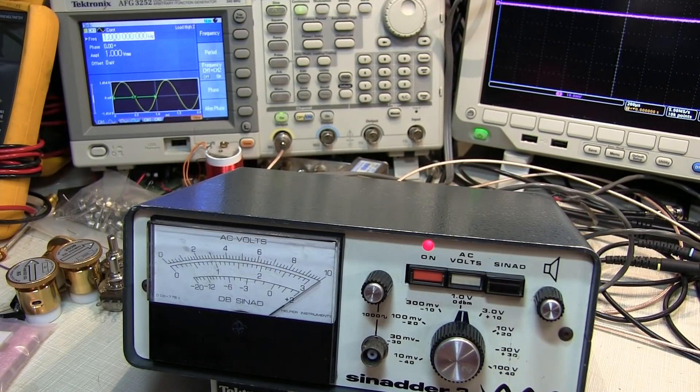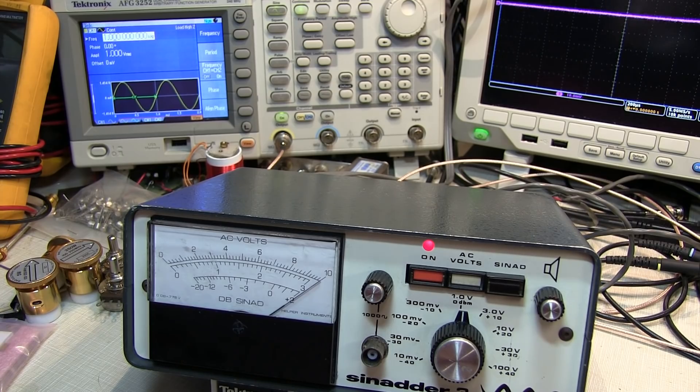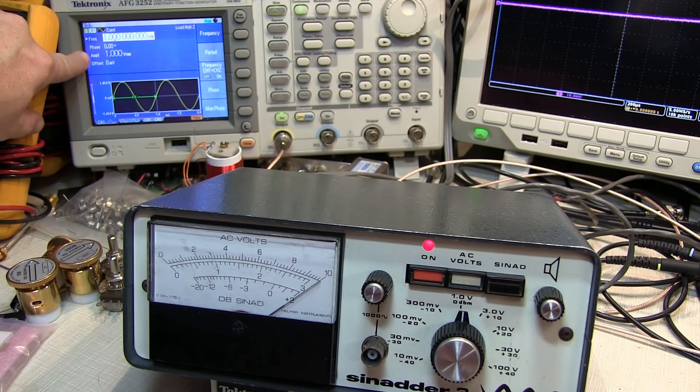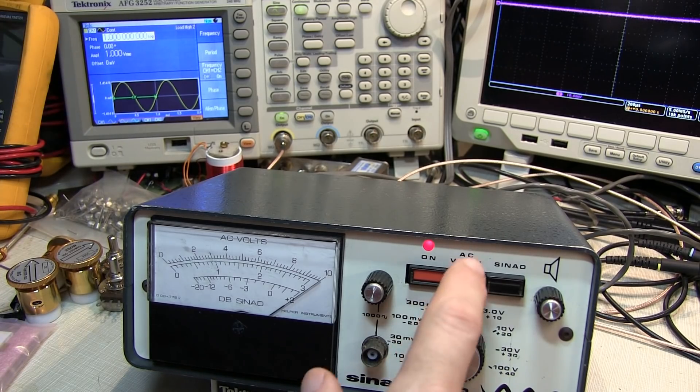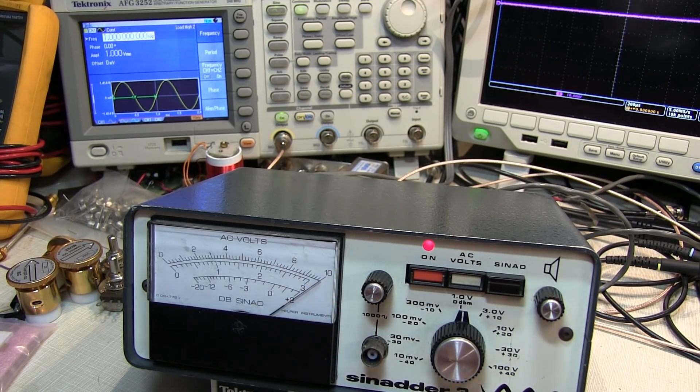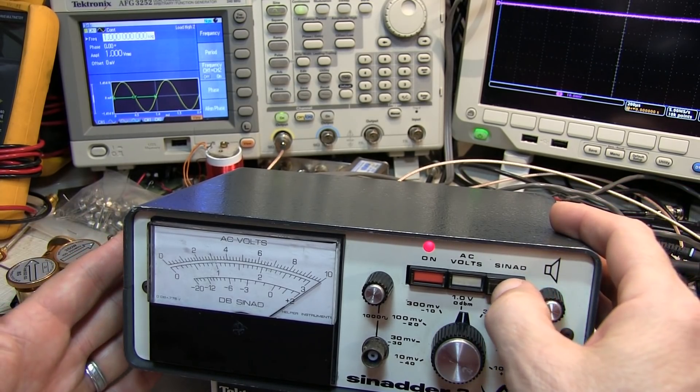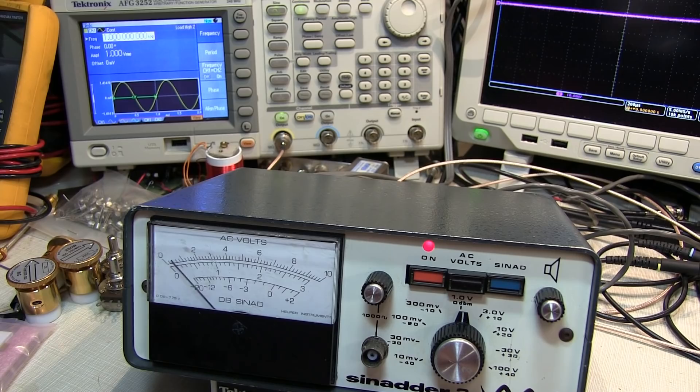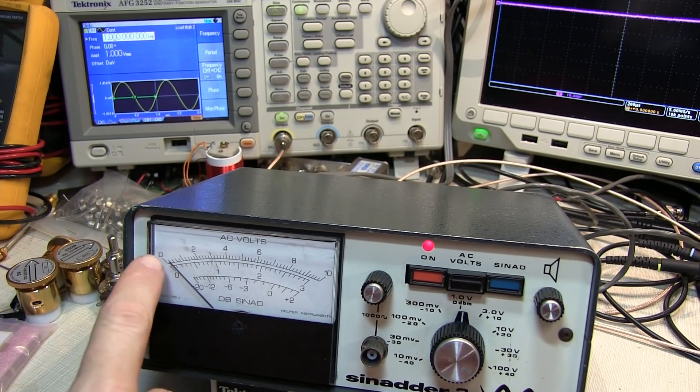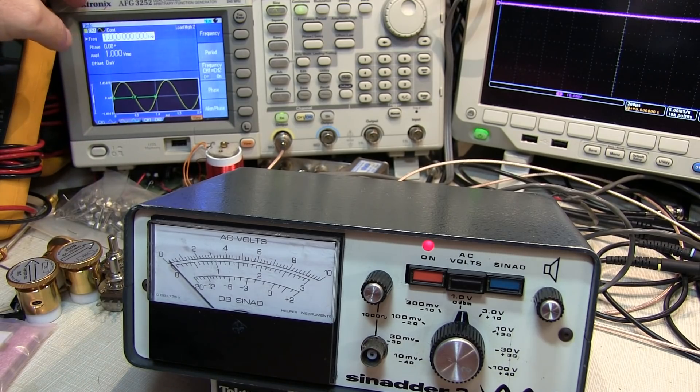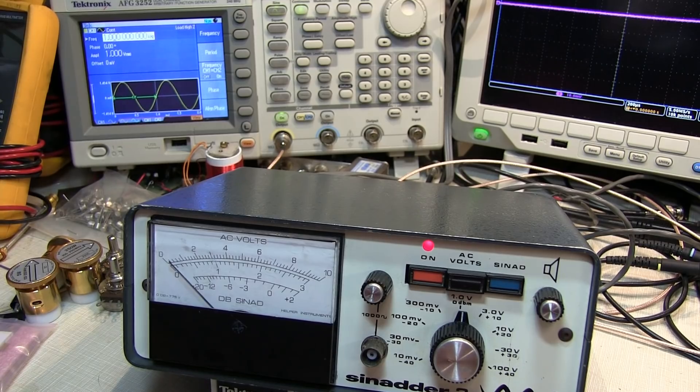All right, let's take a look at the performance of that notch filter and see how well that works. So right now I've got a 1kHz signal at 1 volt RMS going into the meter. In the AC volt position we can see that's reading full scale here on the 1 volt scale. Let's switch over to the SINAD function. Now that notch filter is essentially taking out that 1kHz signal. So what we're left with after notching out this very pure 1kHz sine wave is virtually nothing. And that's why we're not seeing anything.